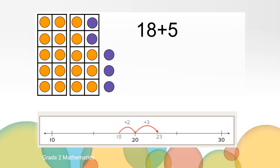Maybe you started with 18 and added a jump of 2 to get to the friendly number 20, and then a jump of 3 more makes 23. Look at both the 10 frames and the number line — what is the same and what is different? Maybe you noticed they both have the same strategy but use different tools to represent it. One used 10 frames and the other used a number line. They are the same strategy because in the 10 frames example, we move two dots over from the 5 to the 18 to get a friendly number. The same thing happened on the number line: we added a jump of 2 to get to 20 and then added a jump of 3 to make 23.